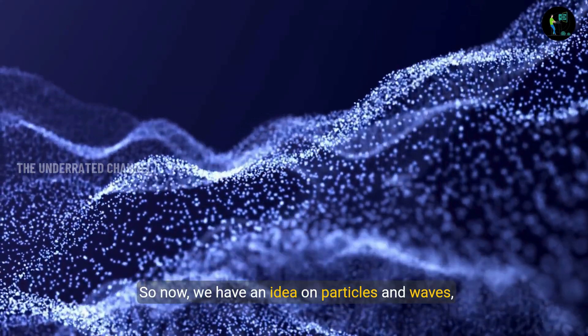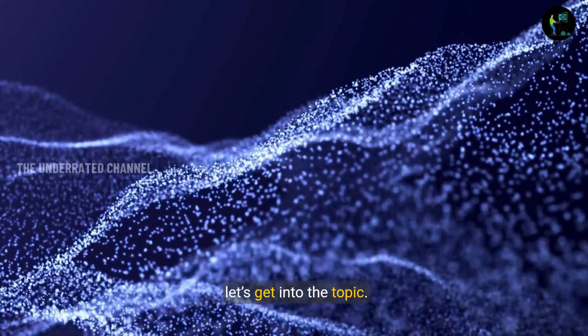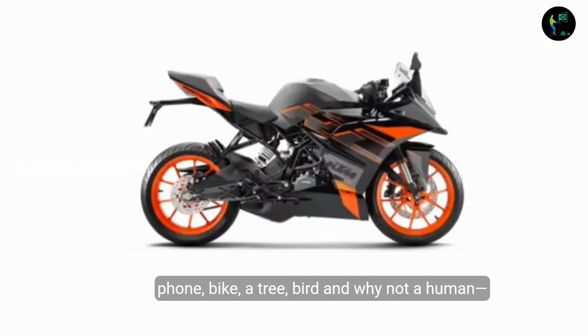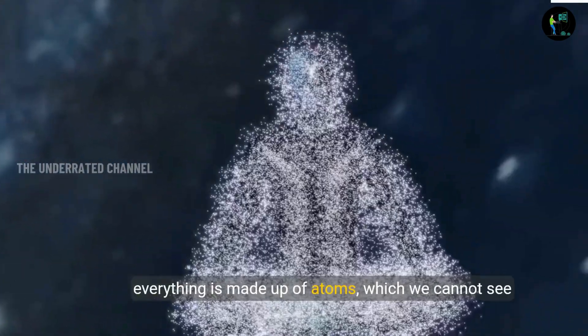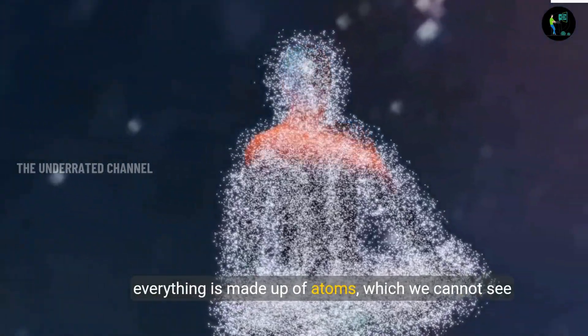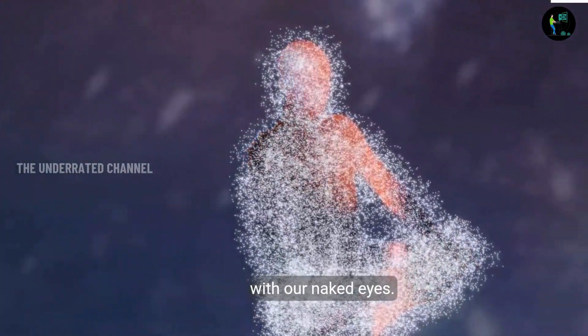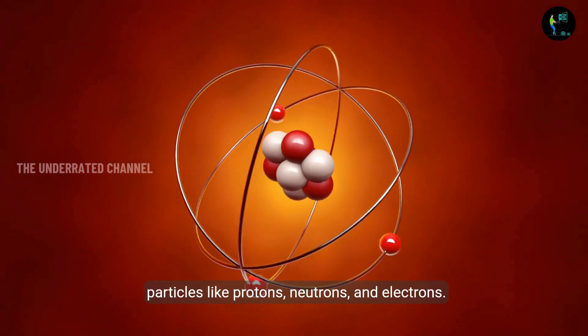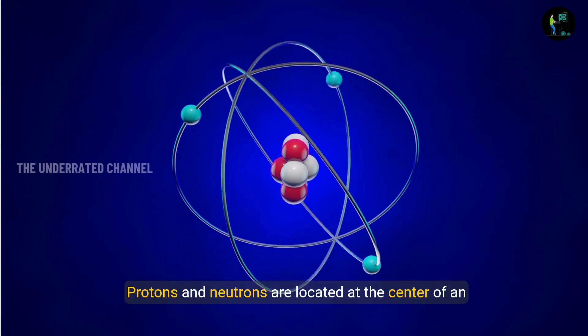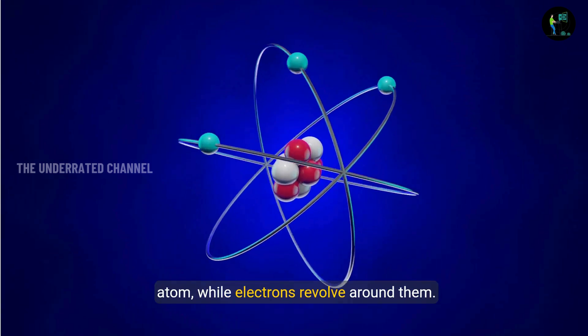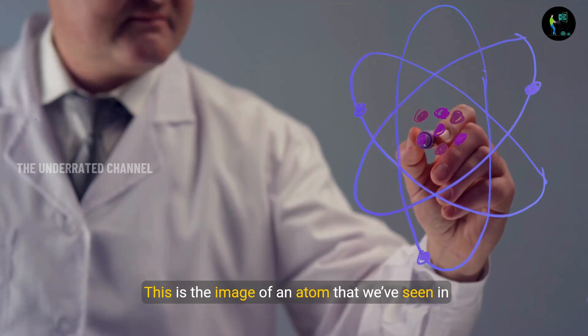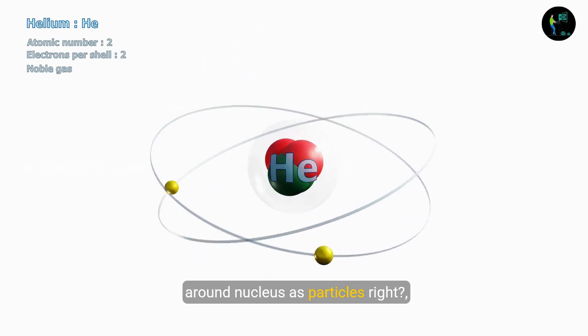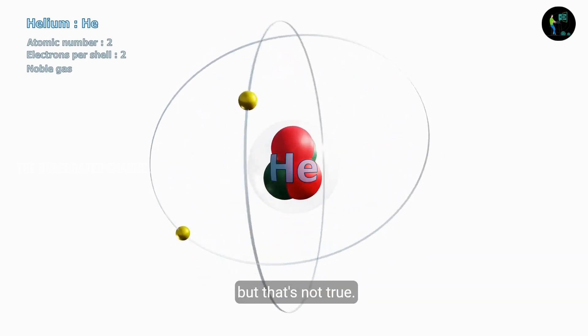So now we have an idea on particles and waves. Let's get into the topic. Every visible object in this world, be it your phone, bike, a tree, a bird and why not a human, everything is made up of atoms, which we cannot see with our naked eyes. These atoms are further composed of subatomic particles like protons, neutrons and electrons. Protons and neutrons are located at the center of an atom while electrons revolve around them. This is the image of an atom that we have seen in our childhood. In our schools, we learned that electrons move around nucleus as particles, right? But that's not true.